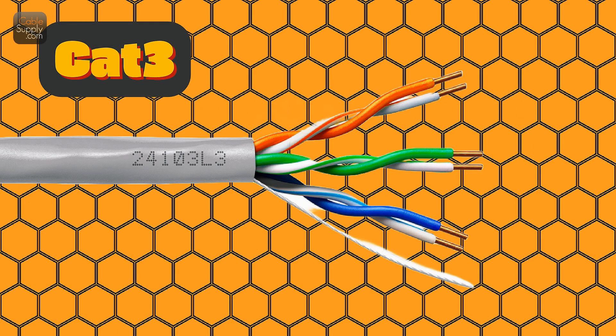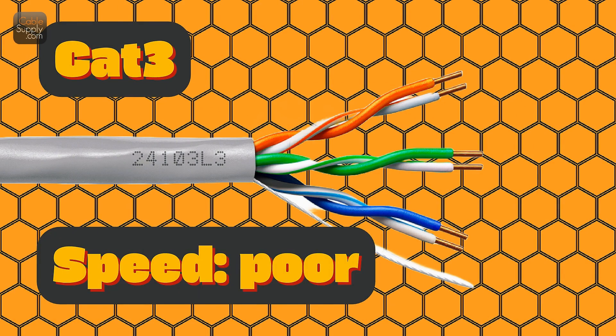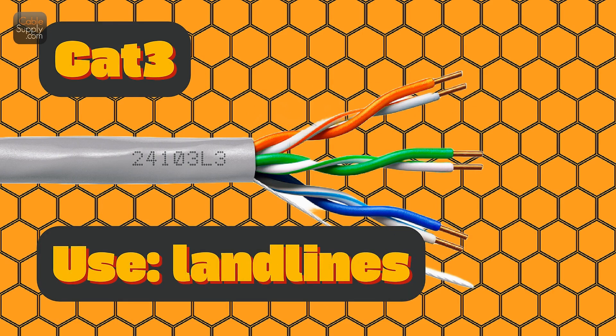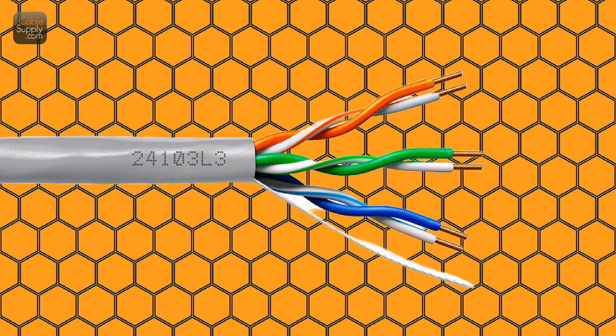CAT 3 — old school, mostly for phones. Speed: very slow, 10 megabits per second. Used for landline phones, not internet. Should I use it? Nope, way too slow for today's internet. CAT 3 cables were used in the 90s, mostly for telephone systems. They don't support modern internet speeds, so you can skip this one unless you're wiring for an old phone system.